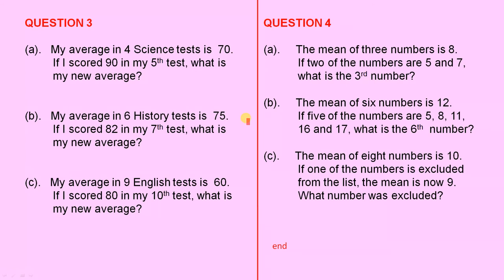Part B: My average in 6 history tests is 75. If I scored 82 in my 7th test, what is my new average?